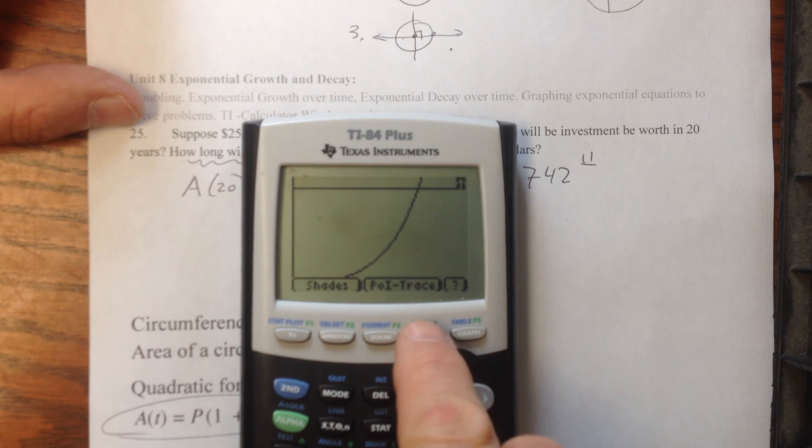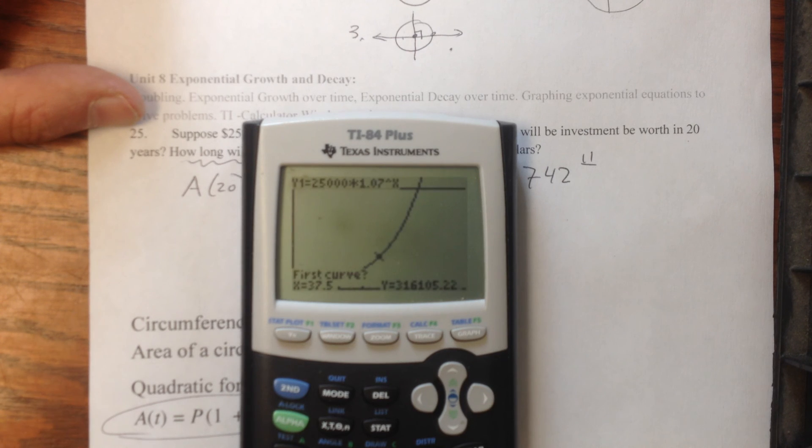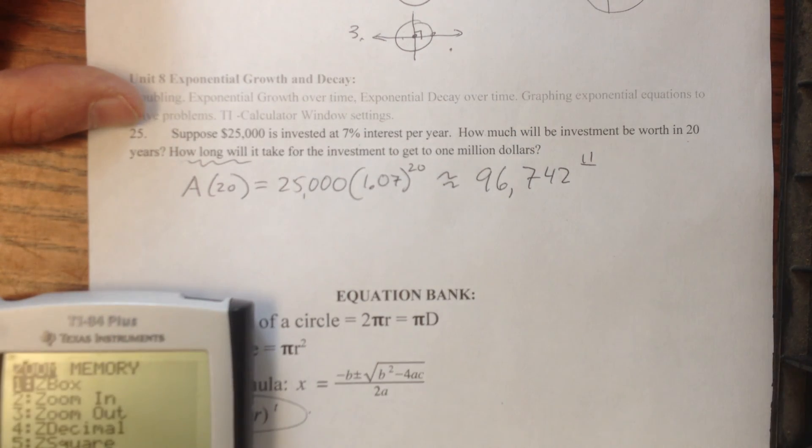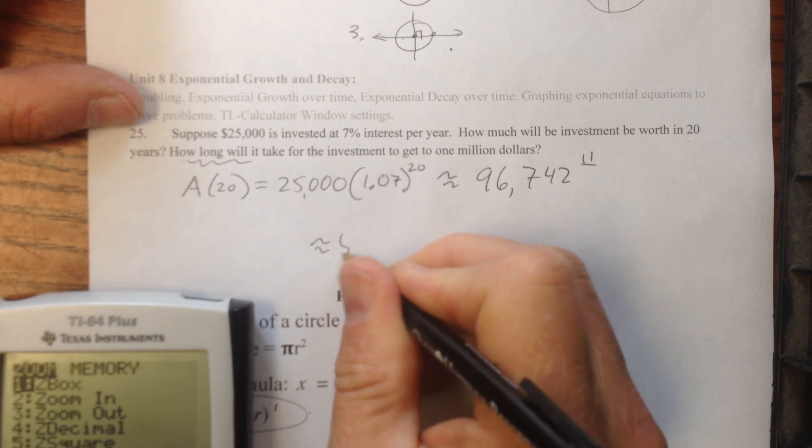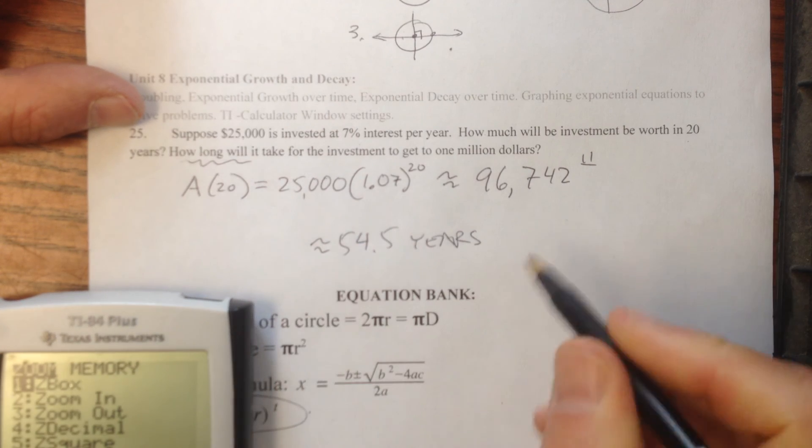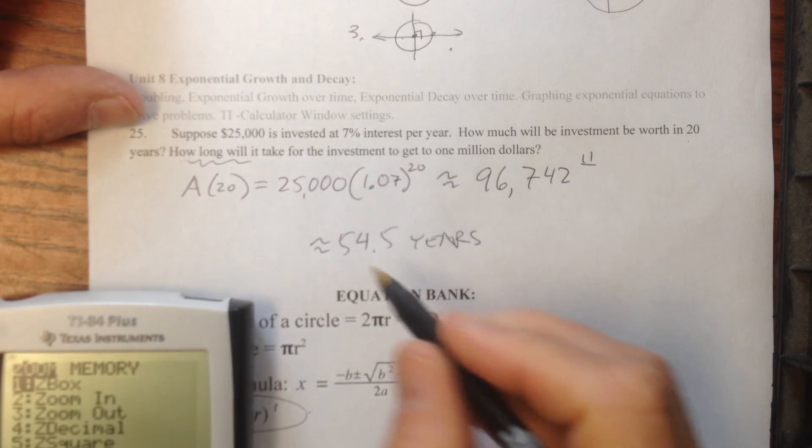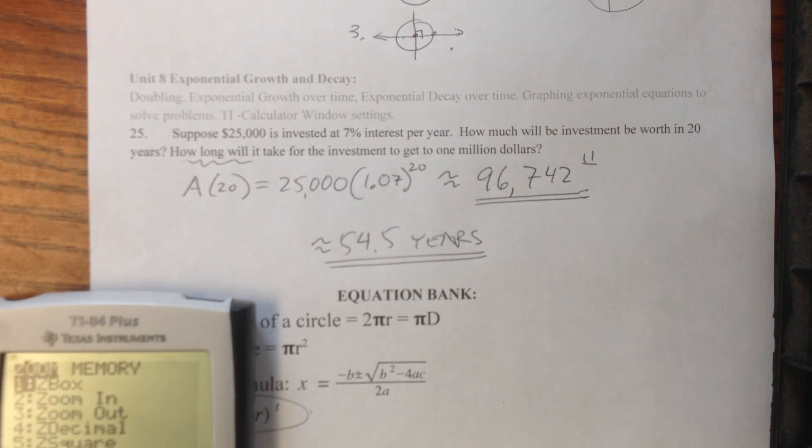I can do that by second, and the trace button gives me calculate, and I want to find the intersection of those two, so I hit 5, is that my first curve, yes it is, is that my second curve, yes it is, do I want to guess, no, I want the calculator to tell me, and it tells me 54.52 years, so I would say approximately 54.5 years, and I'd write that out in a full sentence, and I'd maybe draw my graph to get full credit, but like I said, in the interest of time, I'm just going to call it a day, hope that helped.